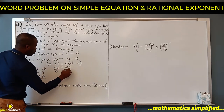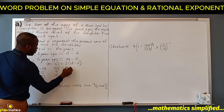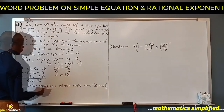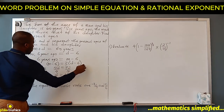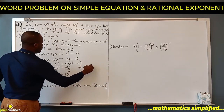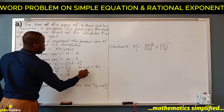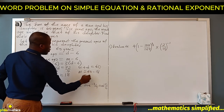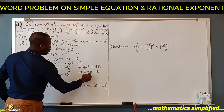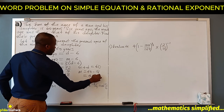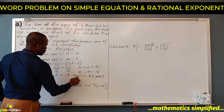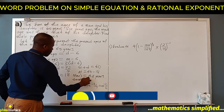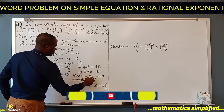So 4D equals 72. Dividing both sides by 4, D equals 18. From M plus D equals 60, M equals 60 minus 18, so the father's age is 42 years. Therefore, the man's age is 42 years and the daughter's age is 18 years.